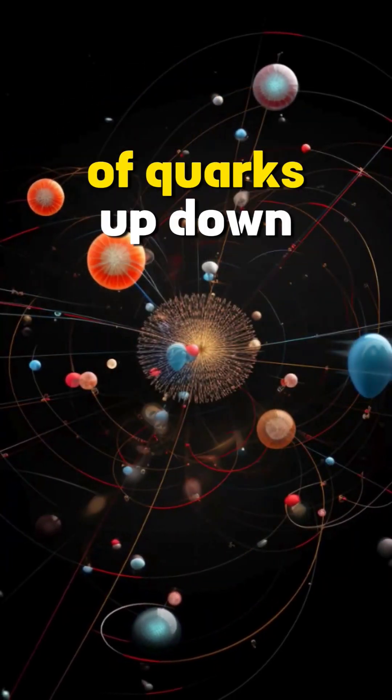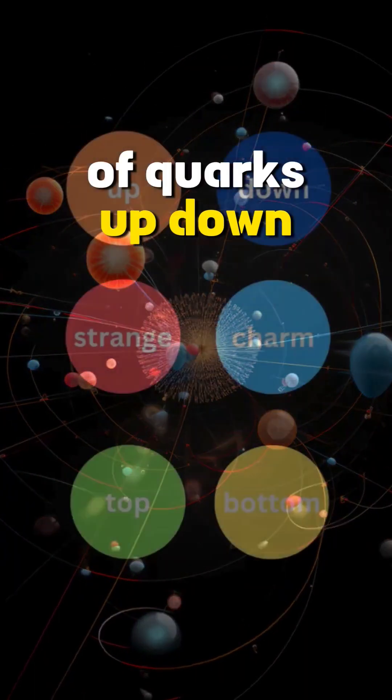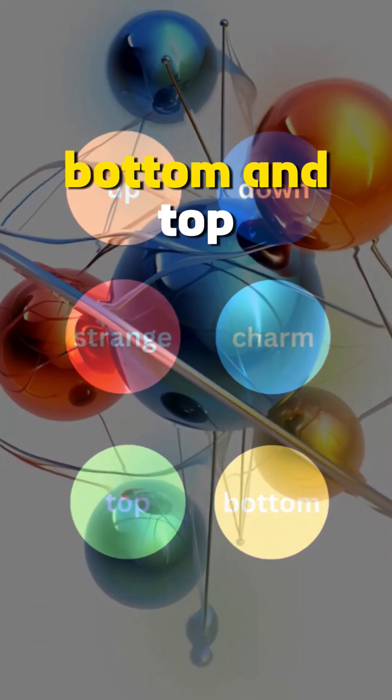There are six types, or flavors, of quarks: up, down, strange, charm, bottom, and top.